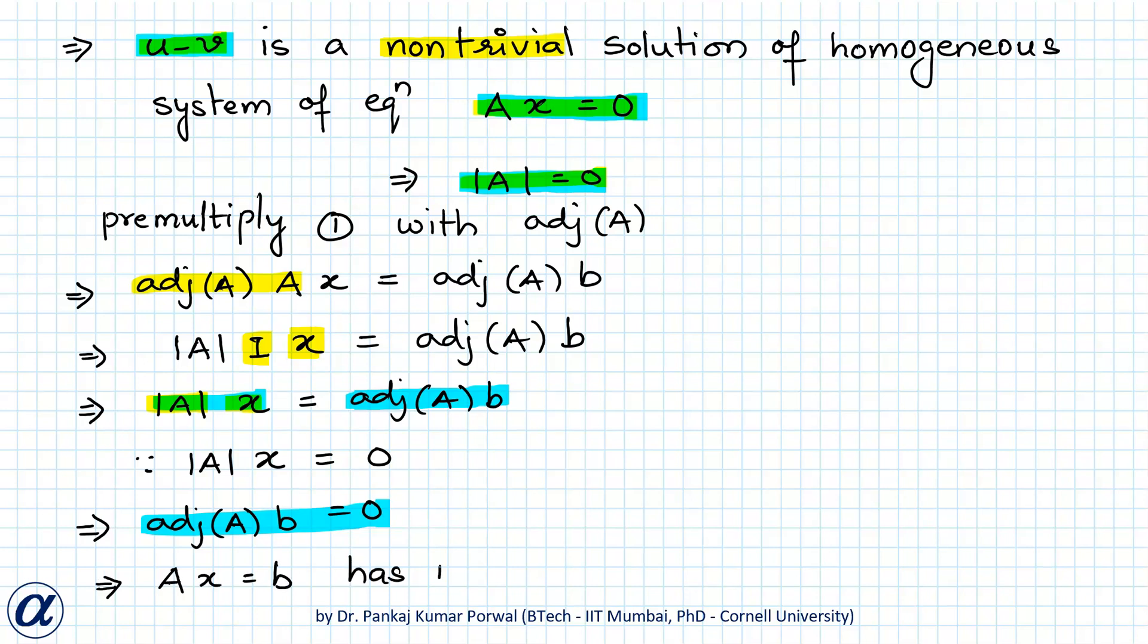And if you want to know in more detail that for a non-homogeneous system AX equals B, when determinant of A is 0 and adjoint of A times B is 0, why it has infinite solutions, then you can watch my video on how many solutions does system AX equals B have in general.